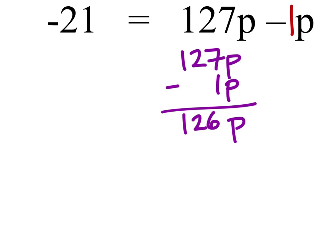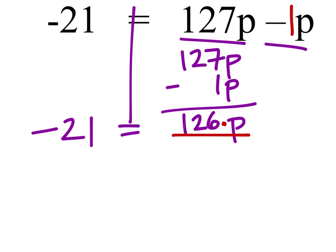Now what that does is it combines both of these two terms on the right side of the equal sign, and this equals negative 21. Well that's 126 times P, so in order to solve for P by itself, we're just going to divide both sides by 126.